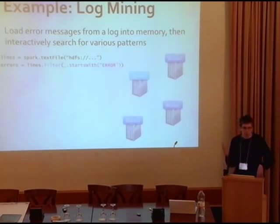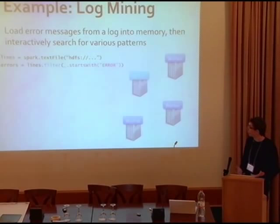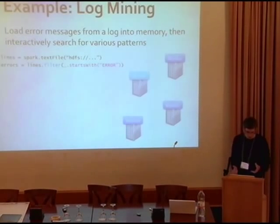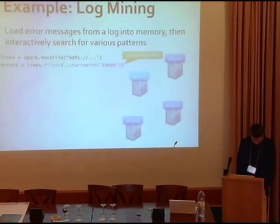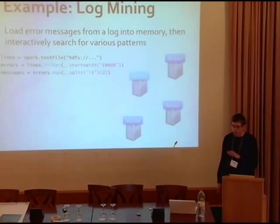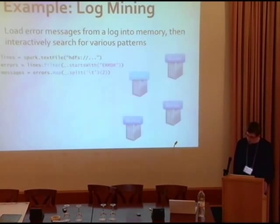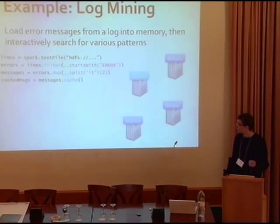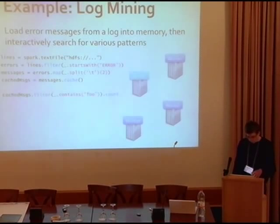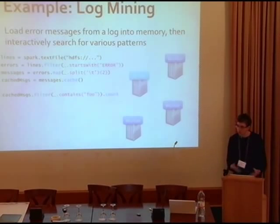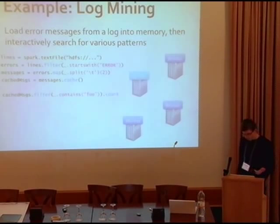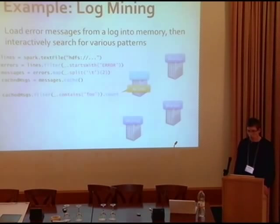We can do more transformations — for example, split by tabs and pull out only field number two (the actual message). Then we tell the system to cache those messages in memory. Up to this point, nothing has happened on the cluster yet — all operations are lazy until you do an action. The action we do next is counting how many contain 'foo'. Now Spark has to run something to give back a number, so it builds a query plan from the transformations and executes it.